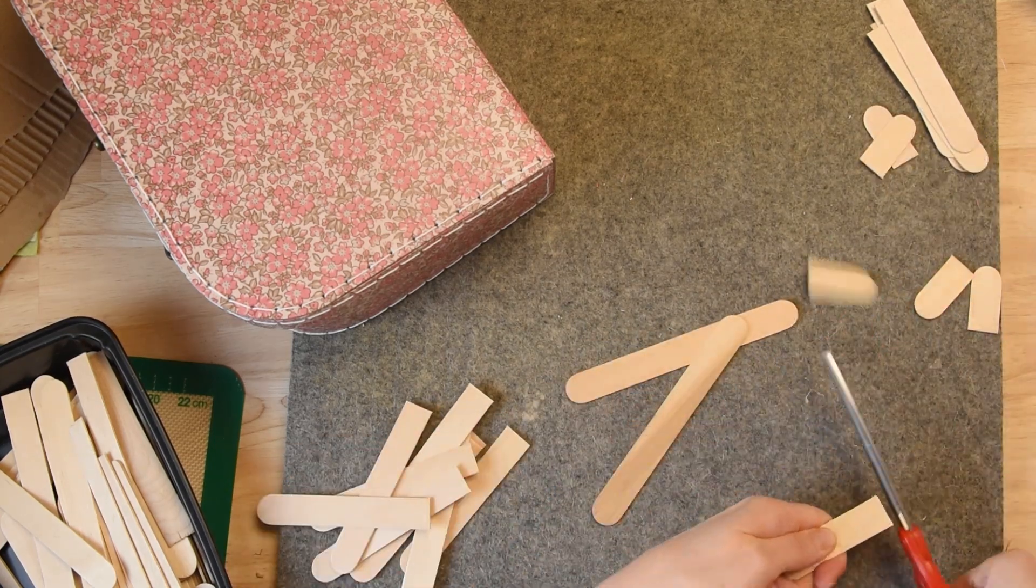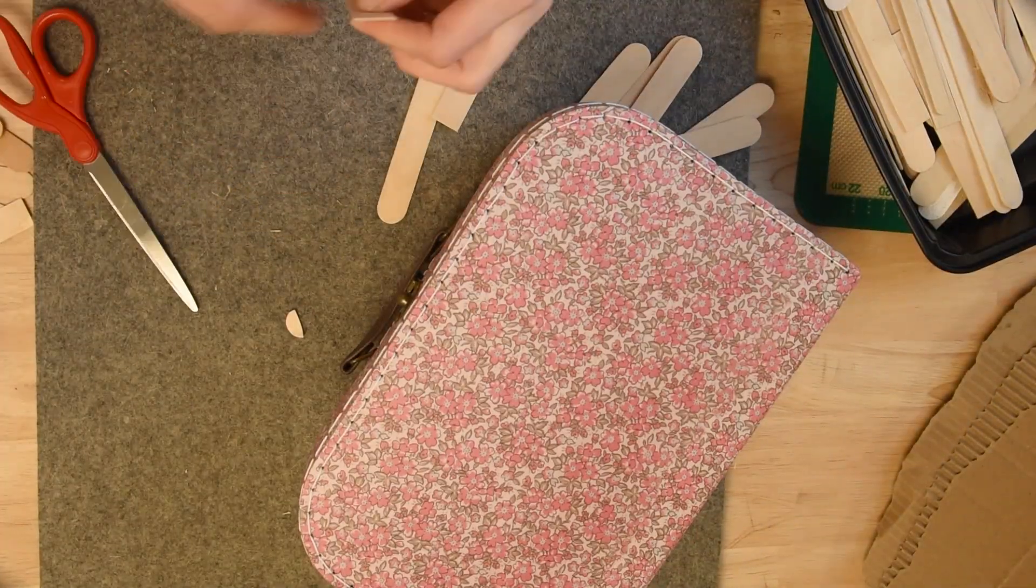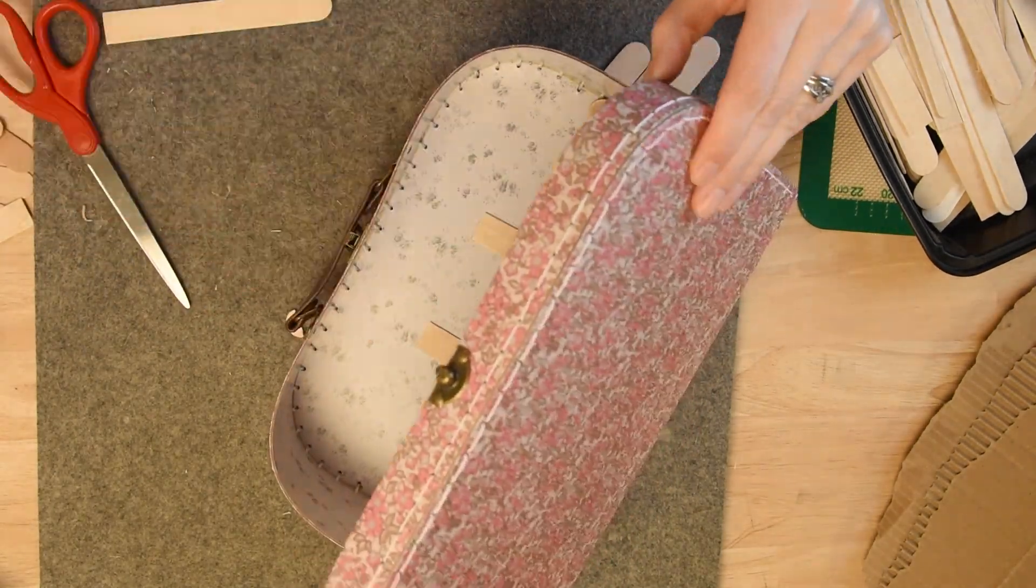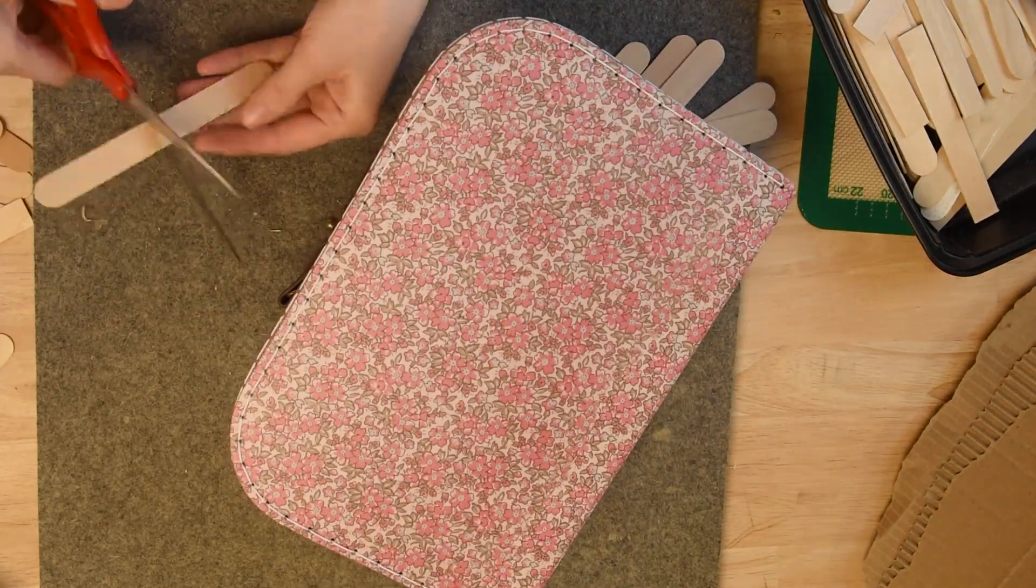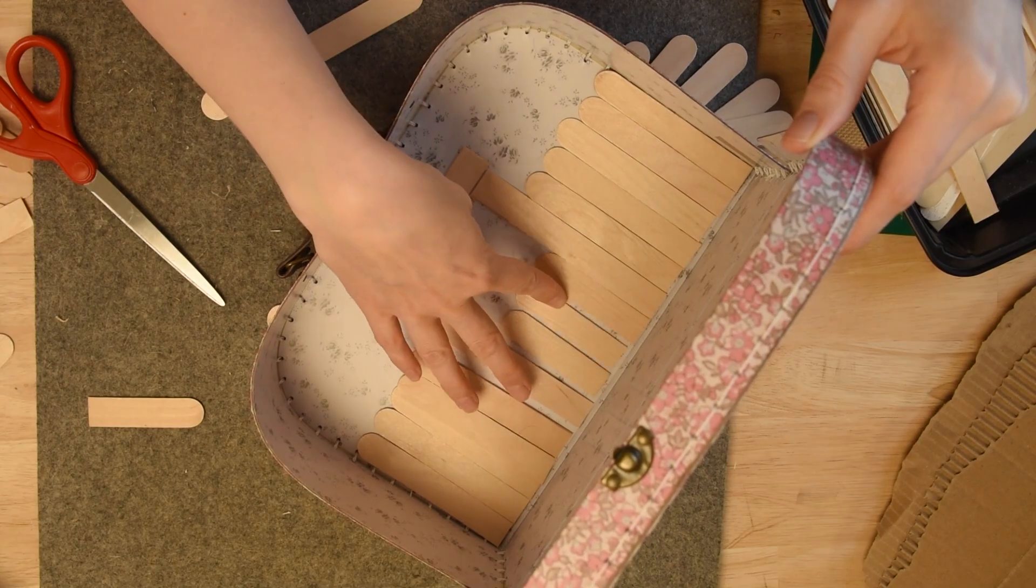I found that cutting popsicle sticks is the easiest with a pair of sharp scissors. I do not use my sewing scissors, but I do have just a nice pair of utility scissors that I use. I feel like it gives it the cleanest edge, cleaner than using a saw or something like that.